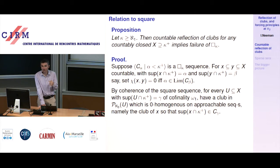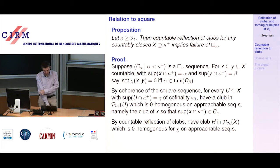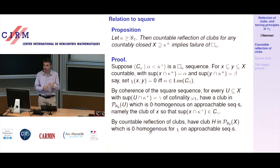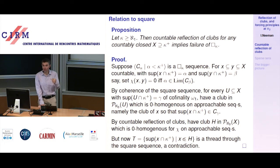This is exactly the hypothesis of countable reflection of clubs — you have all these small homogeneous clubs for this coloring. So using countable reflection of clubs, you now have a club overall on X which is 0-homogeneous for chi. This is a club on the full X which is 0-homogeneous for chi. Then you take the set of sups of X ∩ kappa^+ for X in this club, and this gives you a thread through the square sequence, again using coherence.